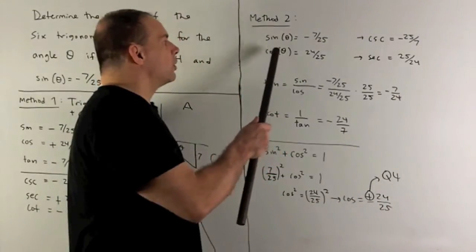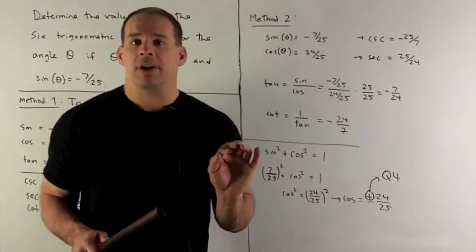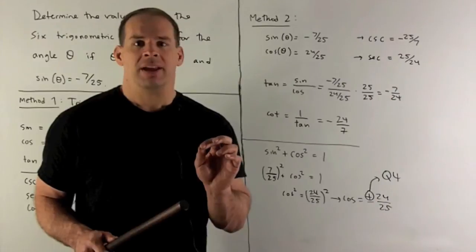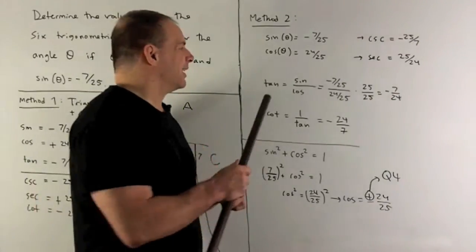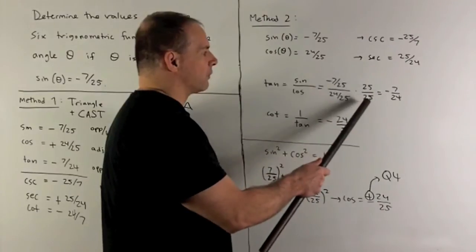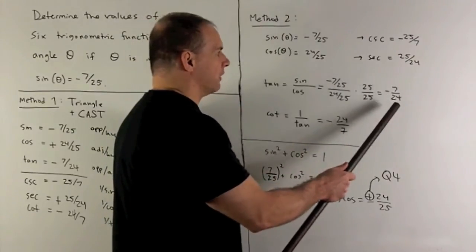Now I have sine and cosine. So you just pull off the rest of our functions from those two. So tangent, that's going to be sine over cosine. That's going to give me, when we clean things up by multiplying by 25 over itself, minus 7 over 24.